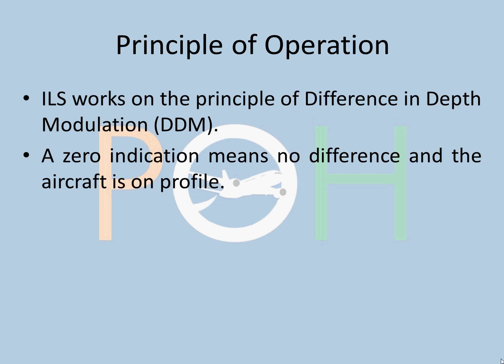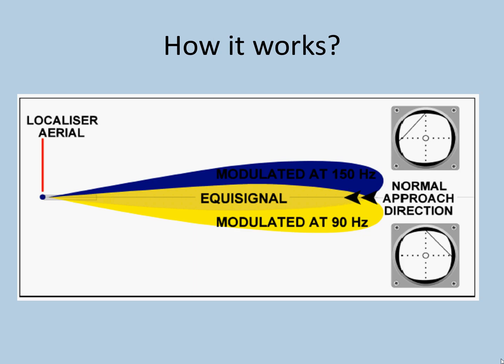The principle of operation is difference in depth modulation. Zero indication means there is no difference and the aircraft is on profile. For example, this is the localizer antenna.